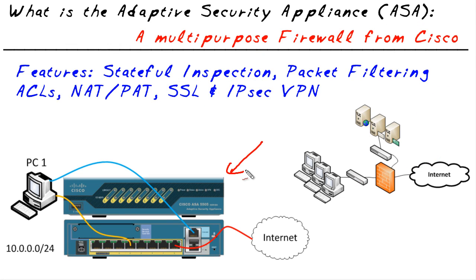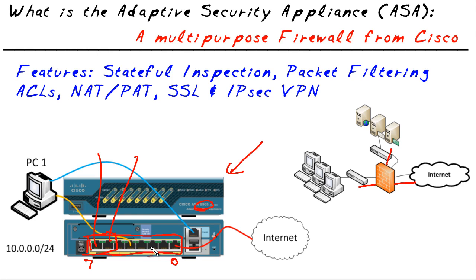Here's what an ASA looks like. This is the baby bear of the family — the 5505. All other models are 19-inch rack-mountable, larger devices. This device has a built-in 8-port switch, ports 0 through 7, and the last two ports support Power over Ethernet — useful for cameras or access points. It also supports virtual interfaces: we create logical interfaces for inside, outside, and DMZ, each corresponding to a VLAN. We assign ports to the appropriate VLAN based on which interface we want them associated with, making it very customizable and easy to work with.